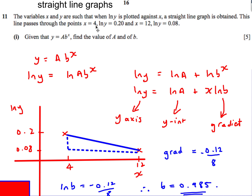Now we plot the points. When x is 4, ln y equals 0.20 — plot that point. When x is 12, ln y is 0.08 — plot that point. Then find the gradient: that's 0.12 divided by 8, negative because it slopes downwards. The gradient equals ln b, so ln b equals minus 0.12 over 8. Since ln is log base e, I do e to the power of minus 0.12 over 8 to get b.